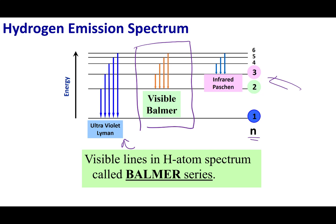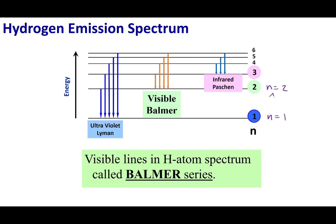There are also transitions where the electron drops to n equals 3, which fall in the infrared range. When looking at the energy levels, the difference between n equals 1 and n equals 2 is quite large. As you go further out, the gaps get smaller — n equals 3 to 4, and n equals 4 to 5 get tinier — so the energy levels clump together further from the nucleus.